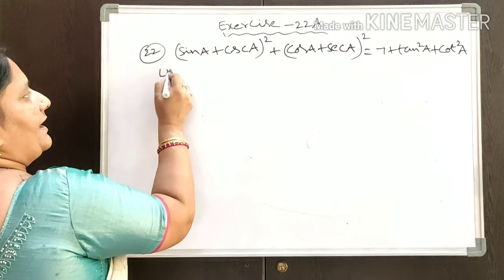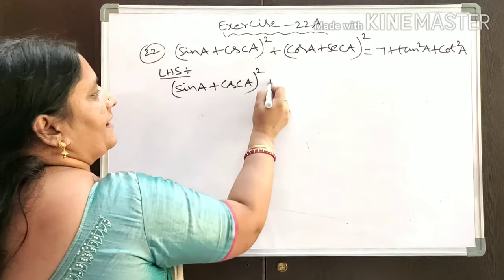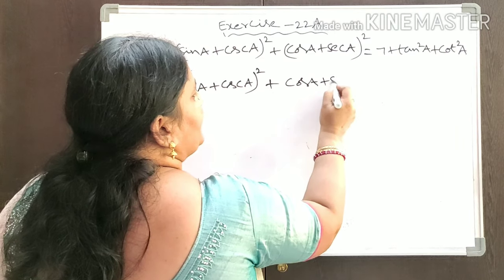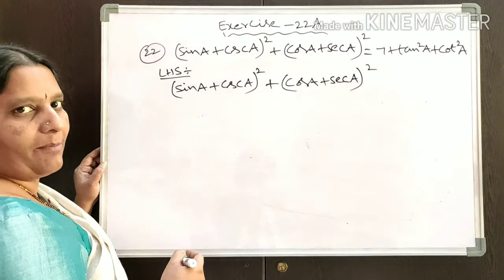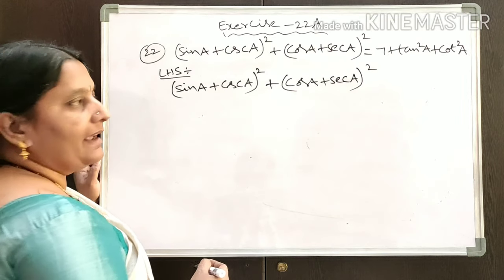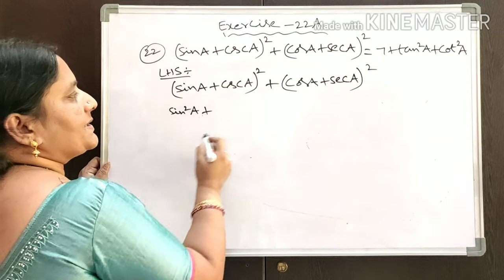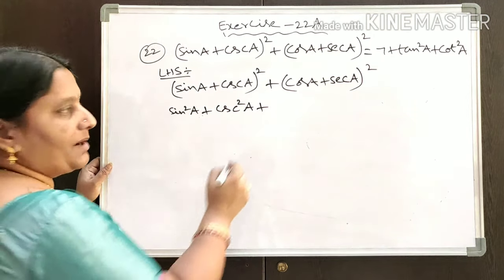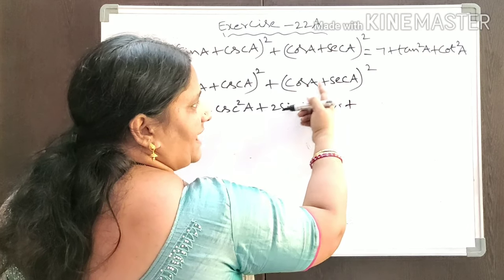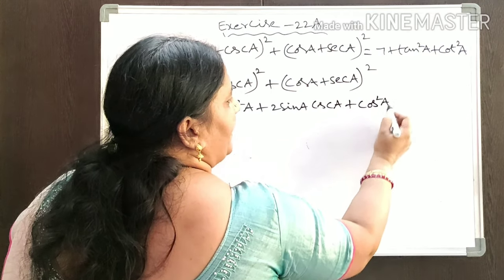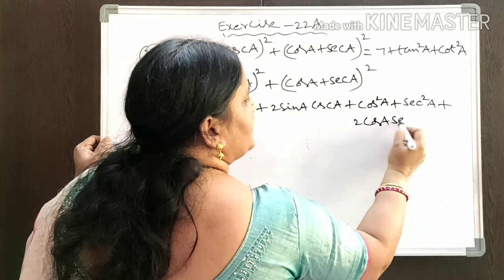To prove this, take the left-hand side: (sinA + cosecA)² + (cosA + secA)². Each is in the form (A + B)², so applying A² + B² + 2AB: we get sin²A + cosec²A + 2sinA·cosecA, plus cos²A + sec²A + 2cosA·secA.